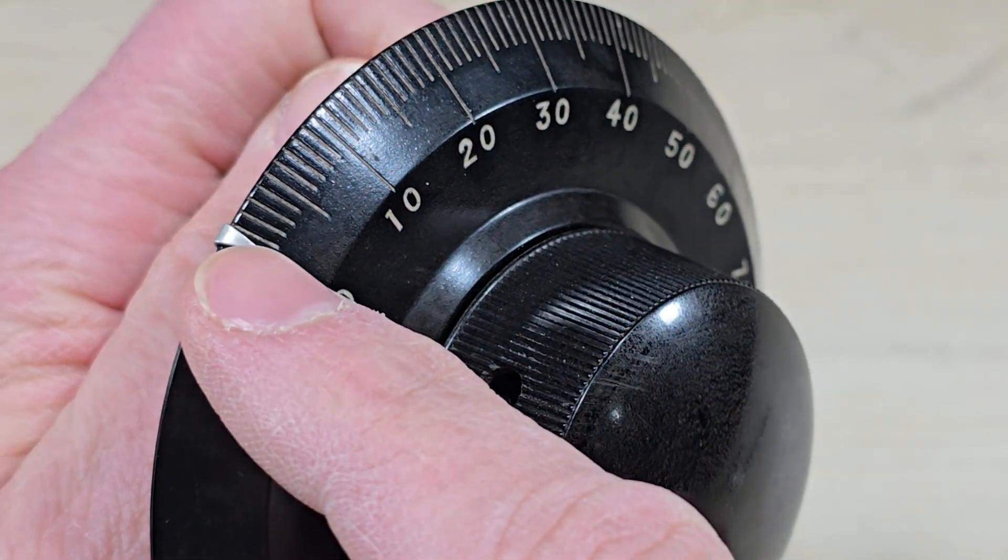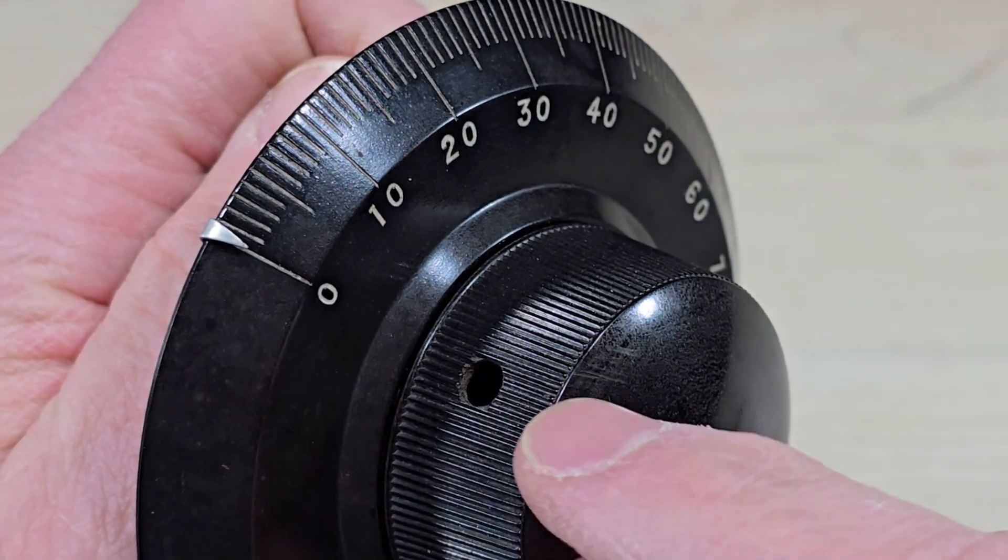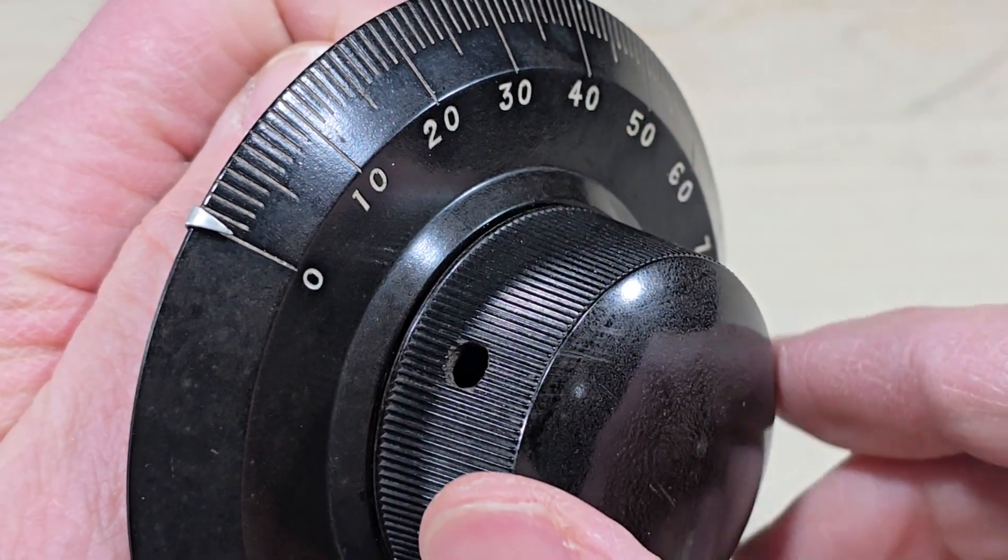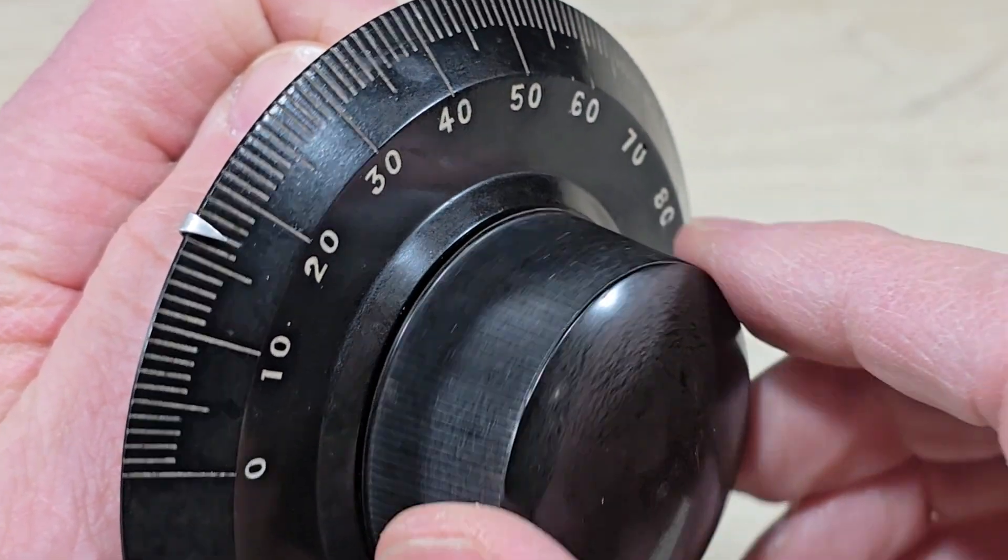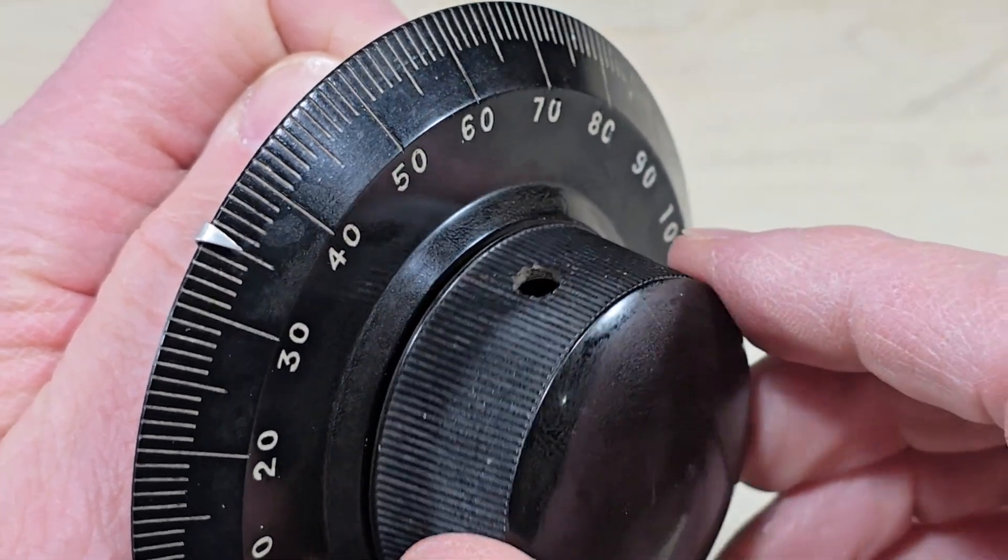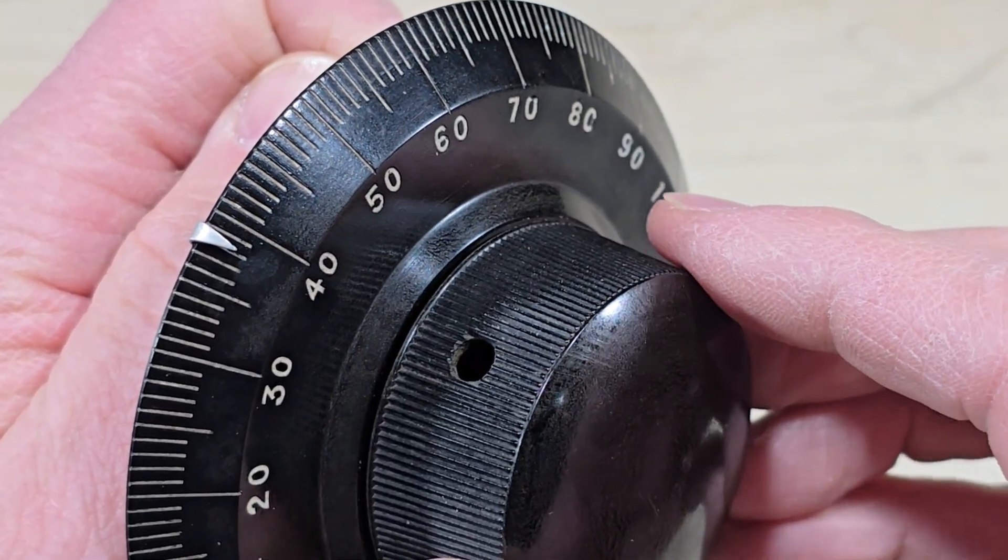Notice that the tuning indicator, the zero, and this hole have all been lined up. As we turn this knob, we can see that the outer ring turns slower.